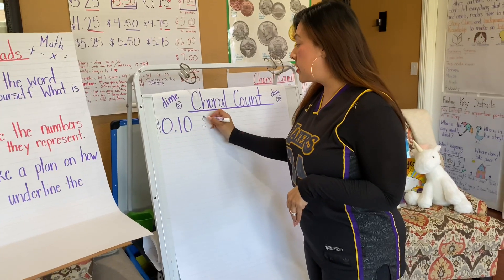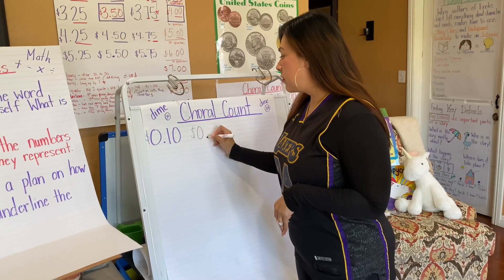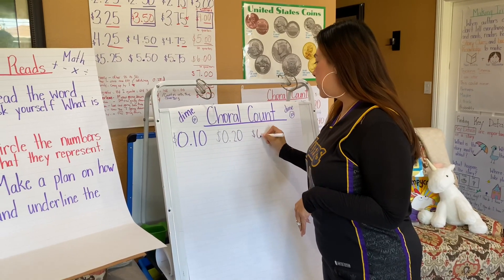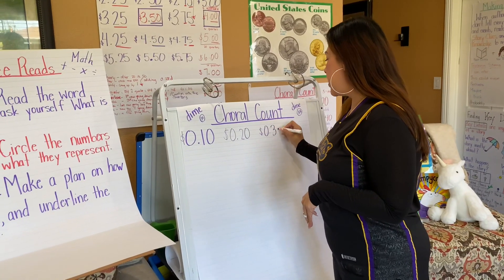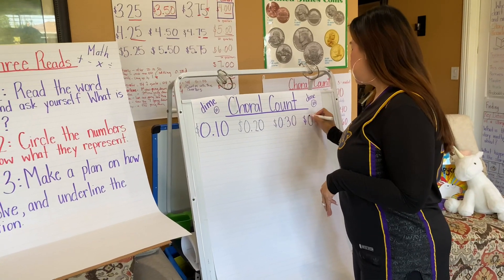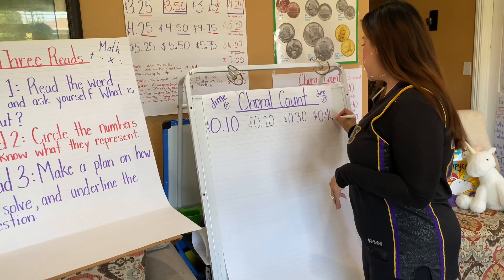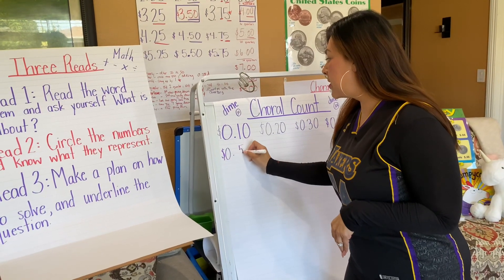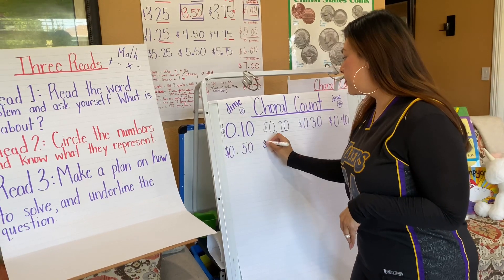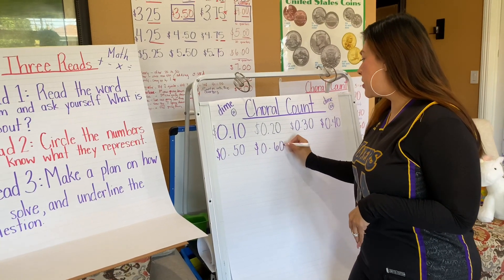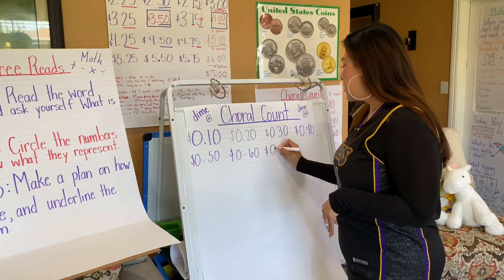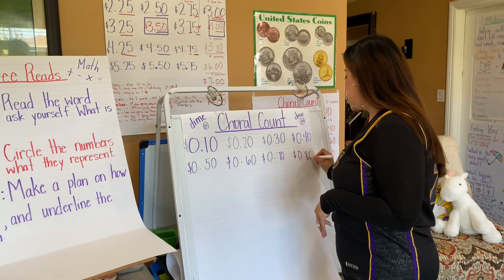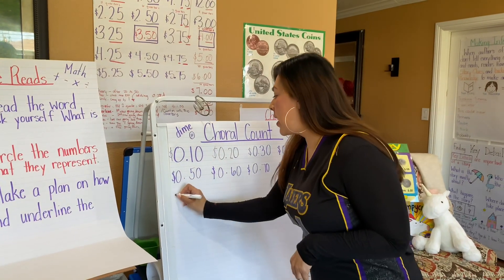So I start with 10 cents, 20 cents, 30 cents, 40 cents, 50 cents, 60 cents, 70 cents, 80 cents, 90 cents.